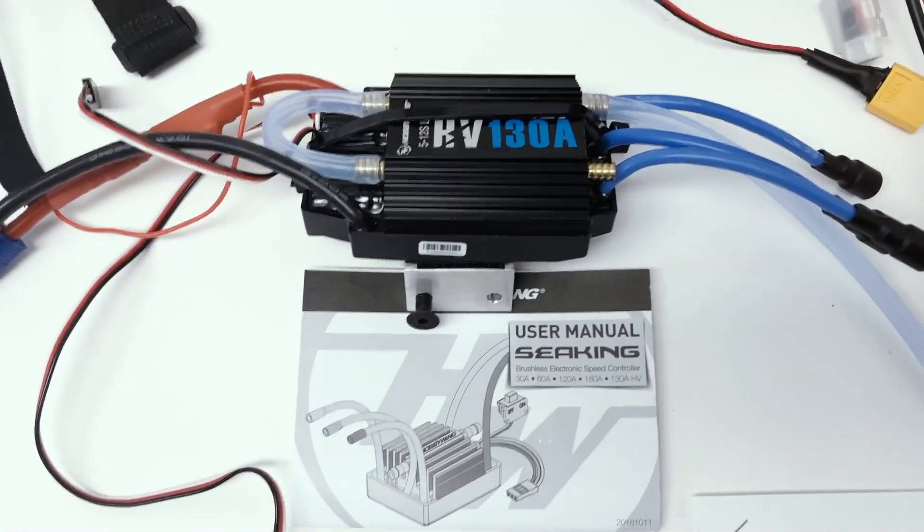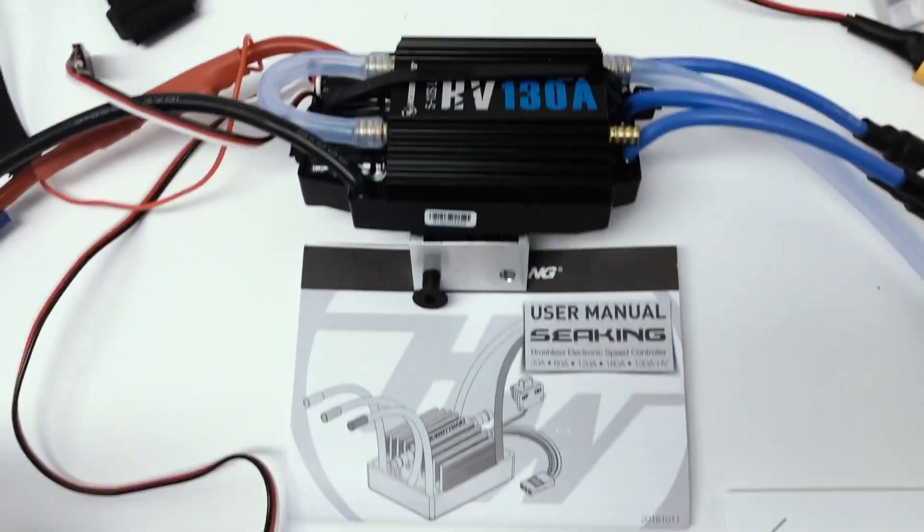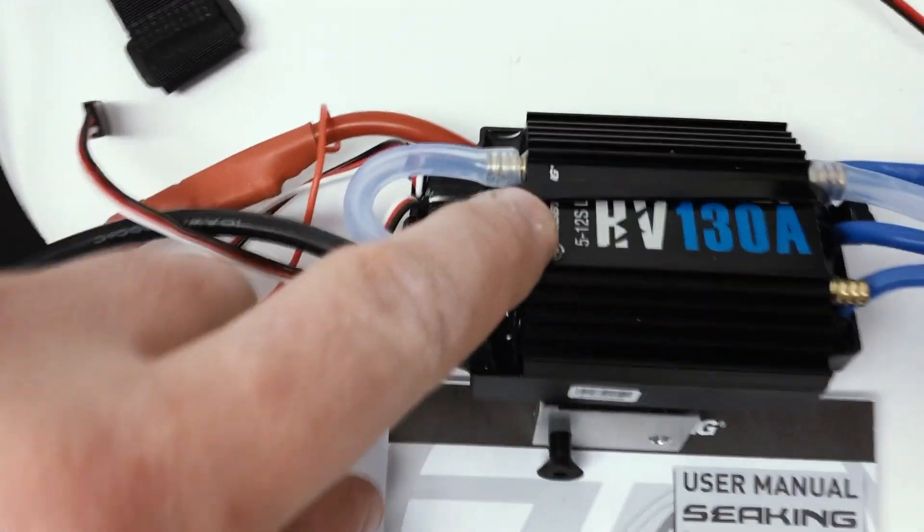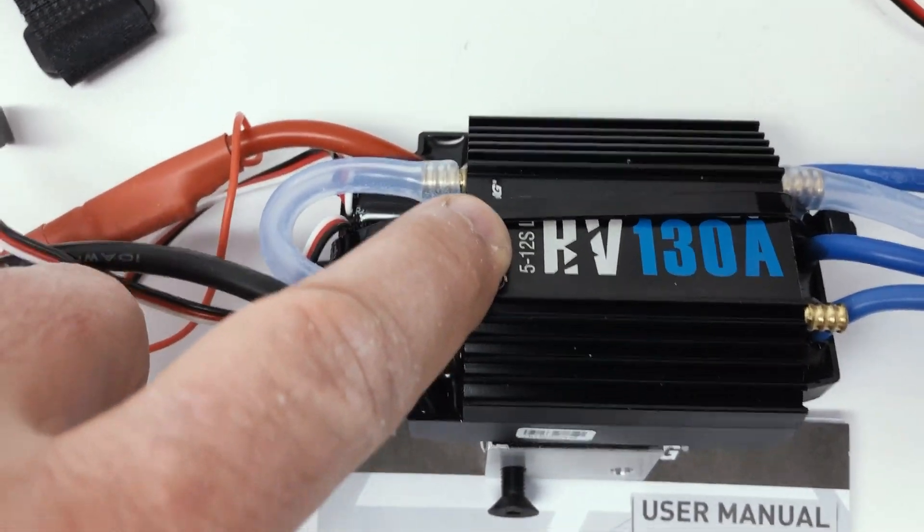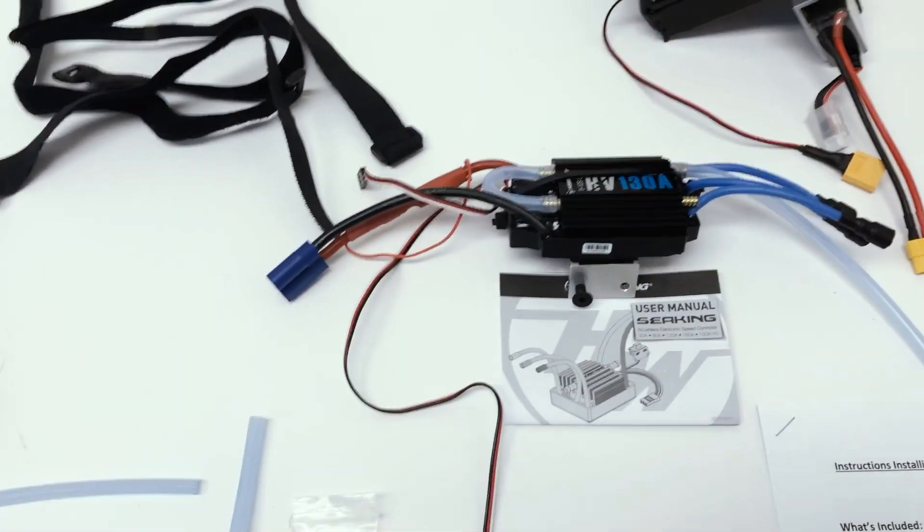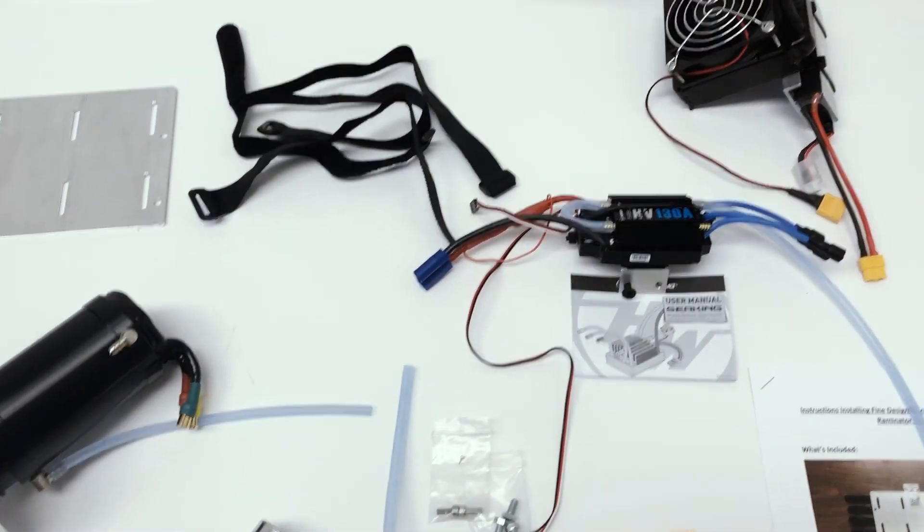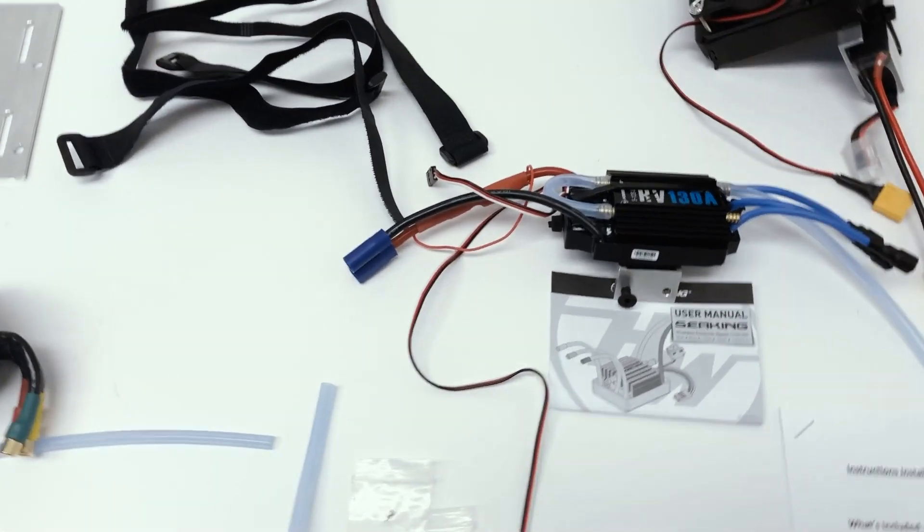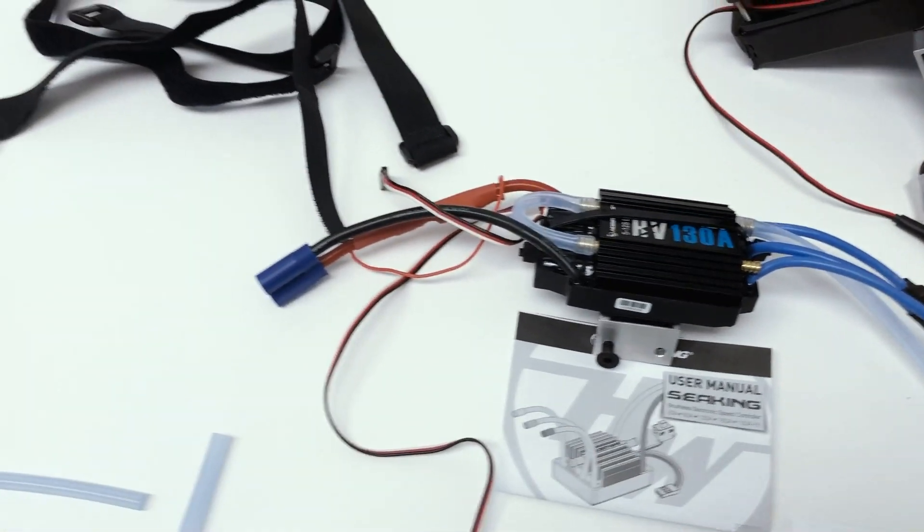It also has a water-cooled ESC, 130 amp Hobby Wing. It's good for 5 to 12s. Even 6s on this truck will move it way faster than the original gas motor. 8s is really fun, but 10 or 12 is just ridiculous.